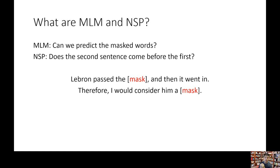The second task is Next Sentence Prediction. We feed it two sentences and BERT needs to decide whether the first sentence comes before the second sentence. For example: 'LeBron passed the basketball and then it went in. Therefore, I would consider him a great player.' It's about predicting if the first sentence comes before the second. Together, these two tasks help BERT understand language and context.